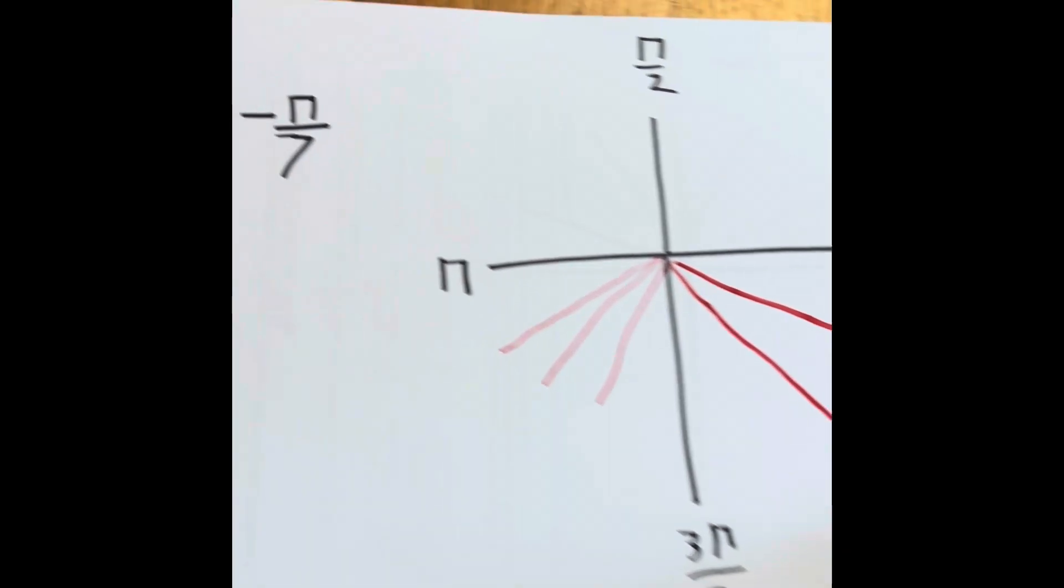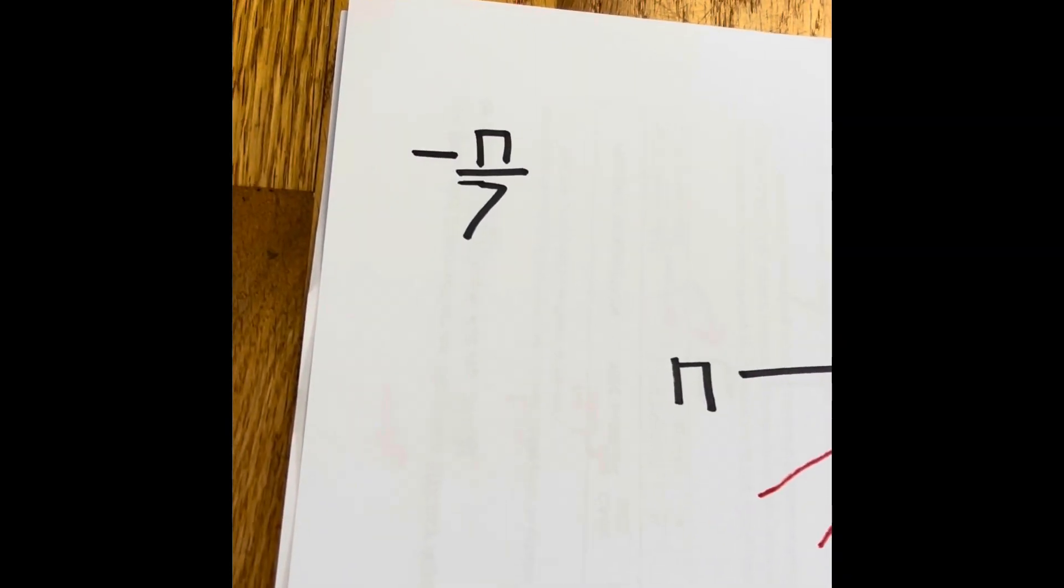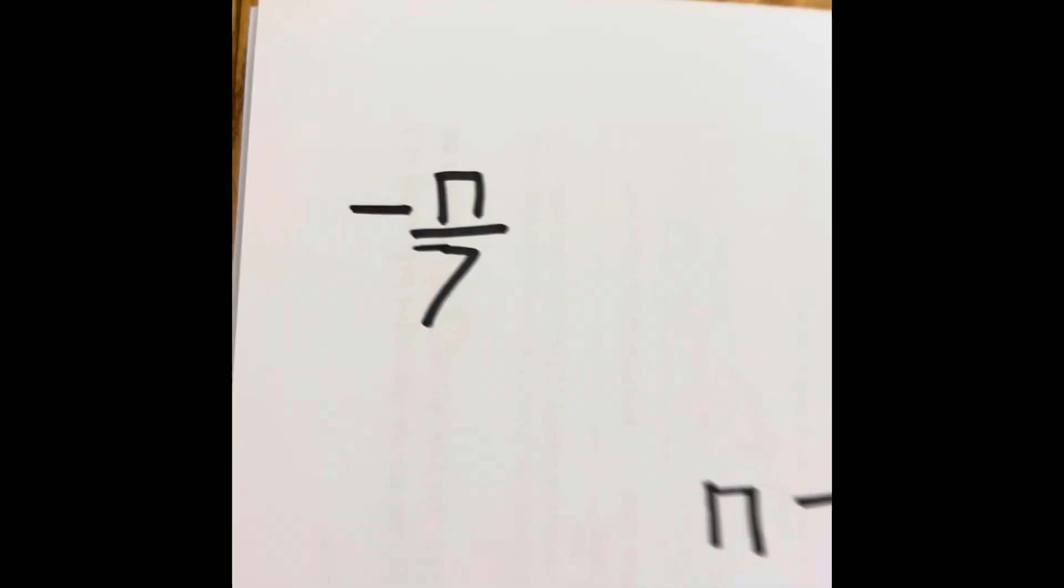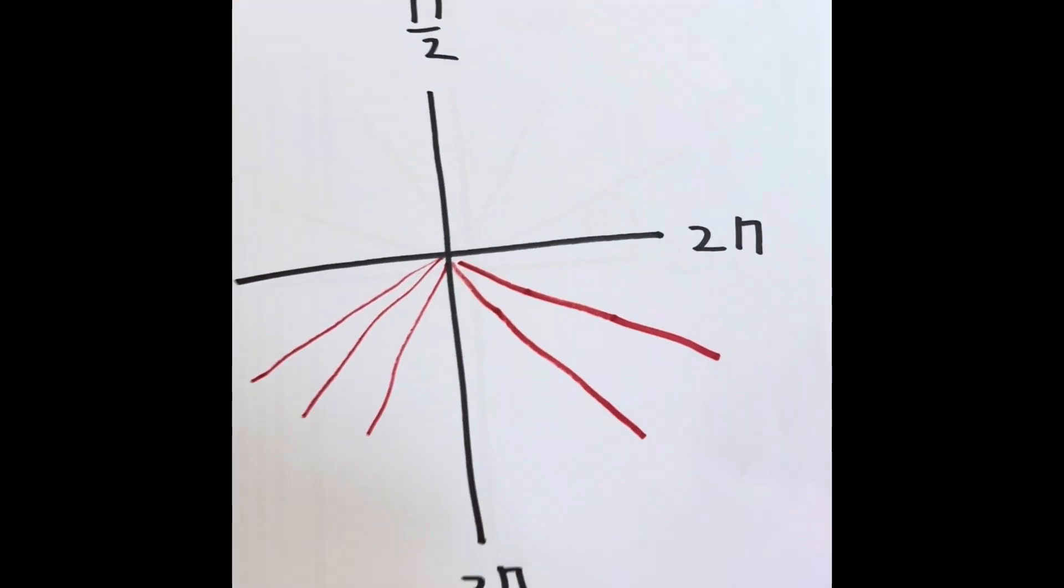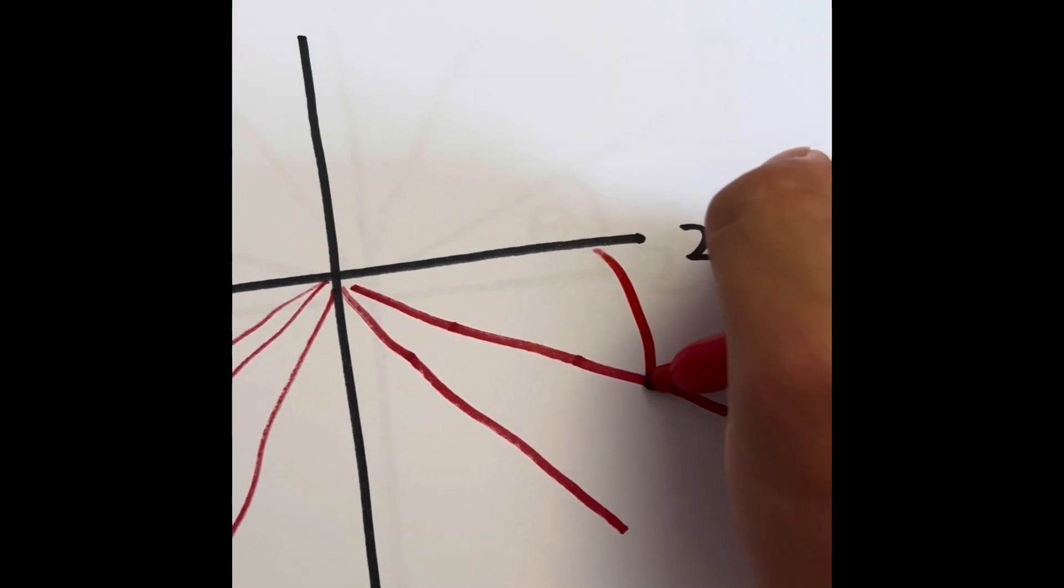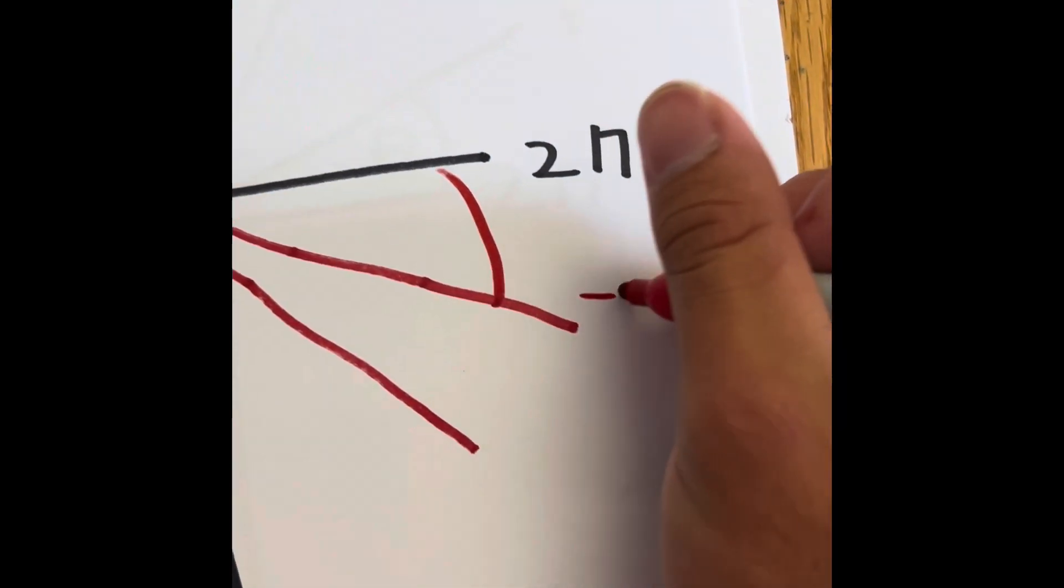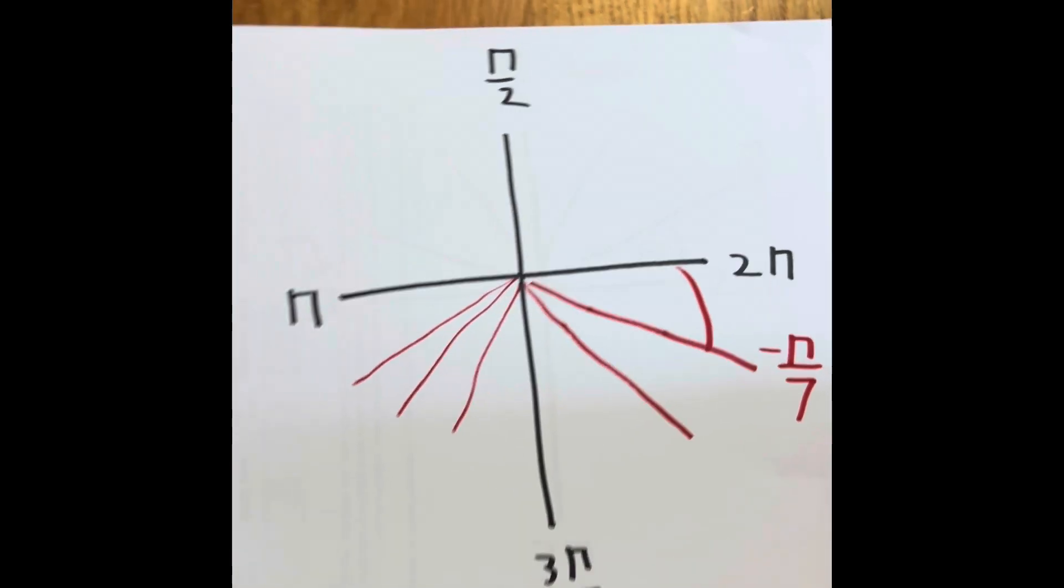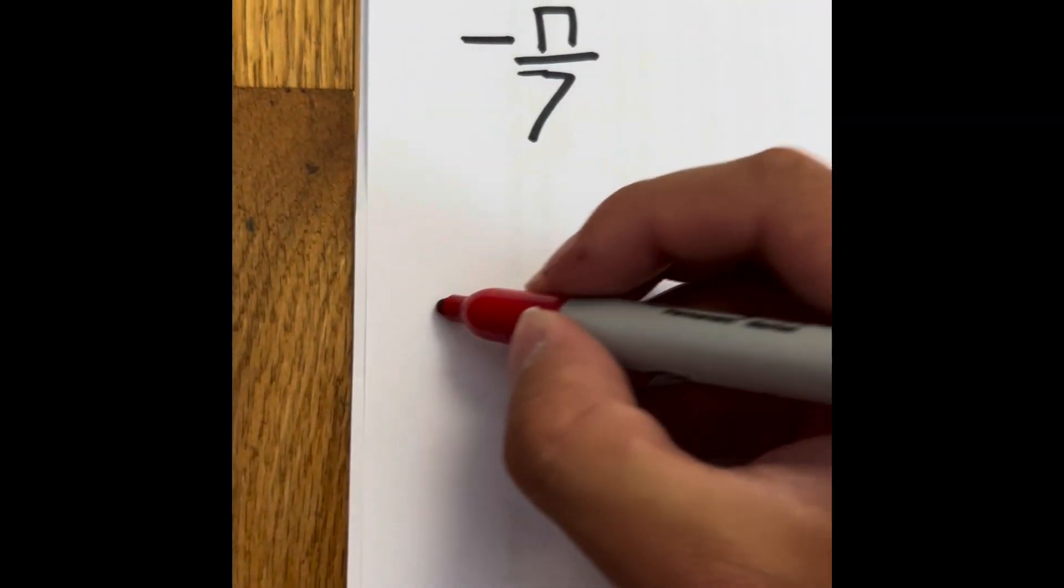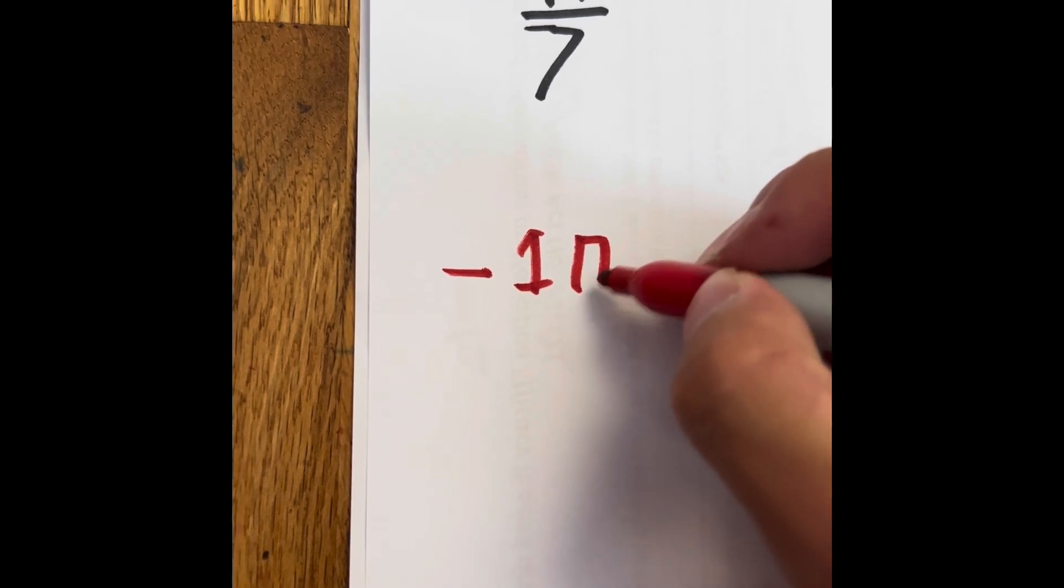And when it says negative π divided by 7, then it says that we have to do 1, 2, 3, 4, 5, 6, 7. So this angle right here would represent negative π divided by 7. It's kind of the same thing as saying negative 1π divided by 7, but the 1's not even there.